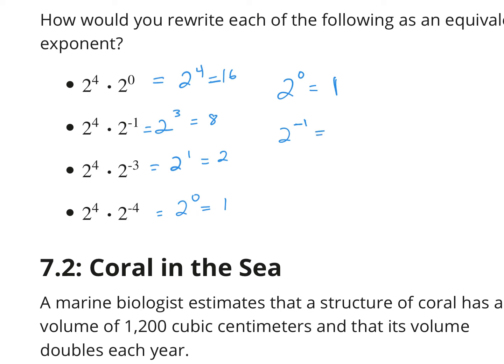Whenever we have negative exponents, we rewrite them as a fraction — we invert it. So 2 to the negative 1st power becomes 1 over 2 to the 1st, which is 1/2. For 2 to the negative 2nd, that's 1 over 2 squared, which is 1/4. And 2 to the negative 3rd is 1 over 2 cubed, which is 1/8 — and so on. As we get into the negatives, our numbers become fractions that get smaller and smaller. Anything raised to a power never equals 0; it always gets into fractions that get smaller and smaller.